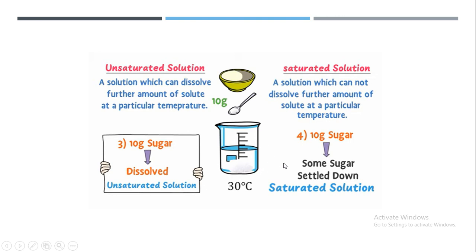Now if we add a further 10 grams of sugar, it will not dissolve and will settle down at the bottom. So we get a saturated solution when we have dissolved the maximum amount of solute in the solvent at a particular temperature, and this maximum amount is also the solubility.